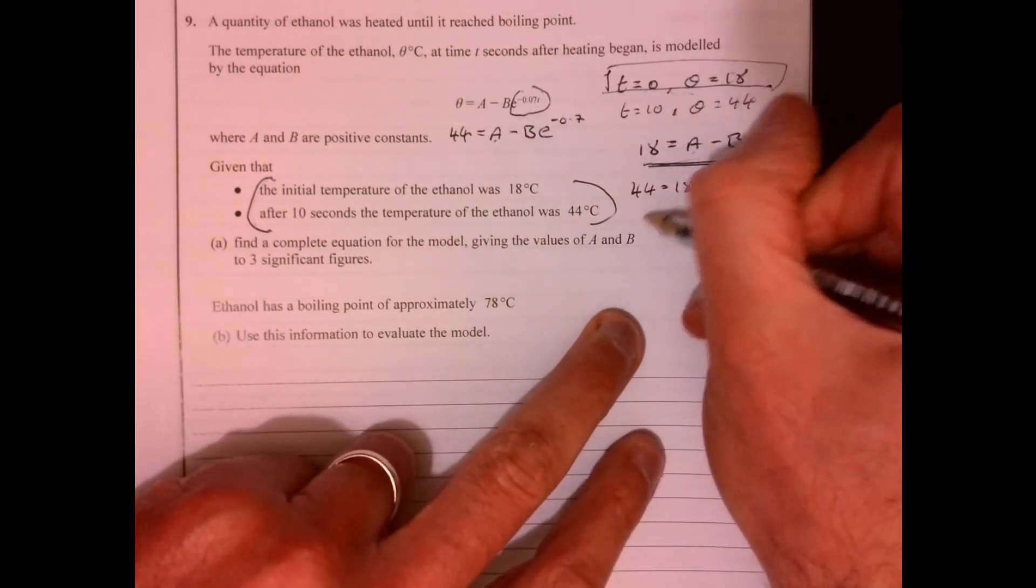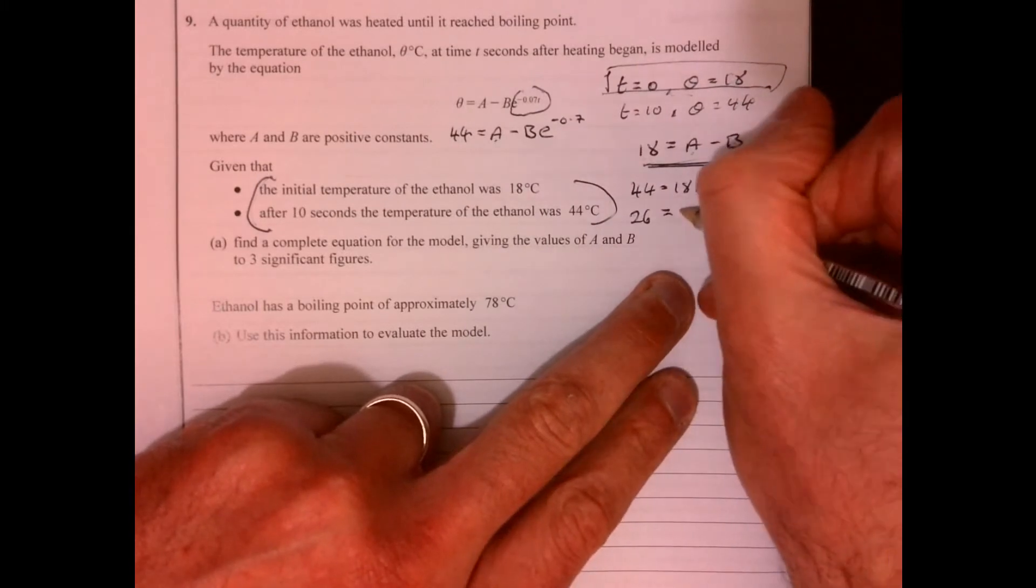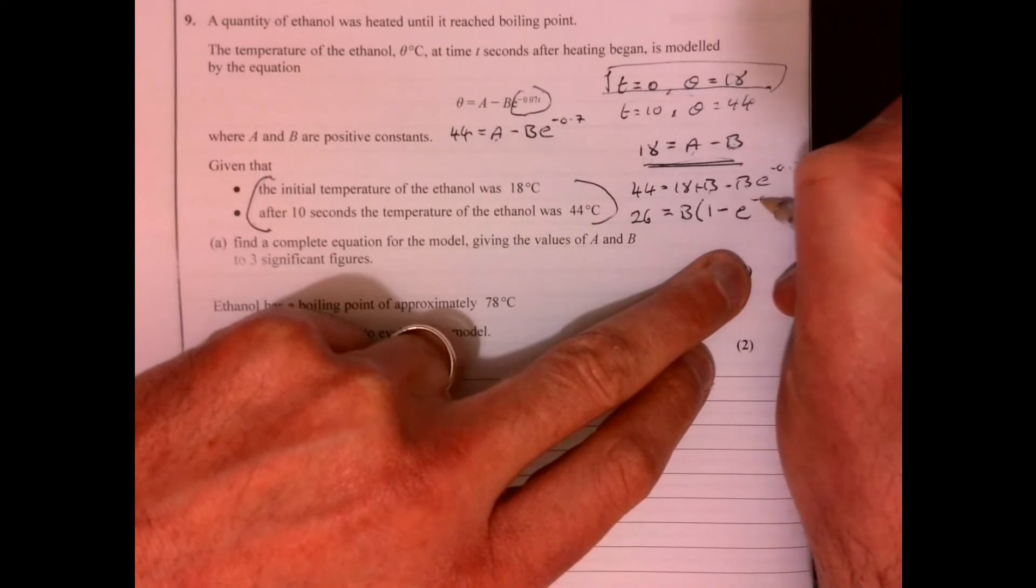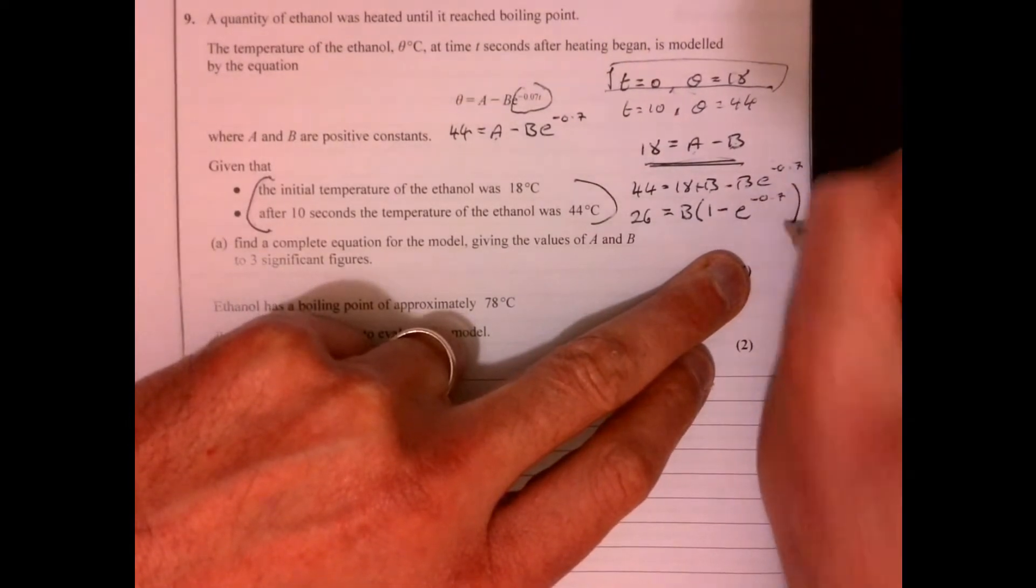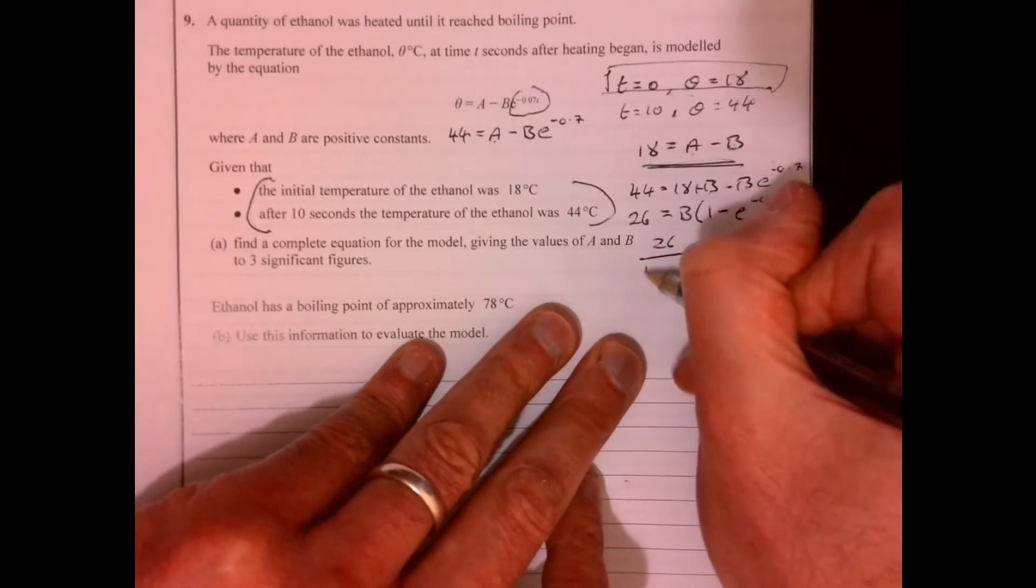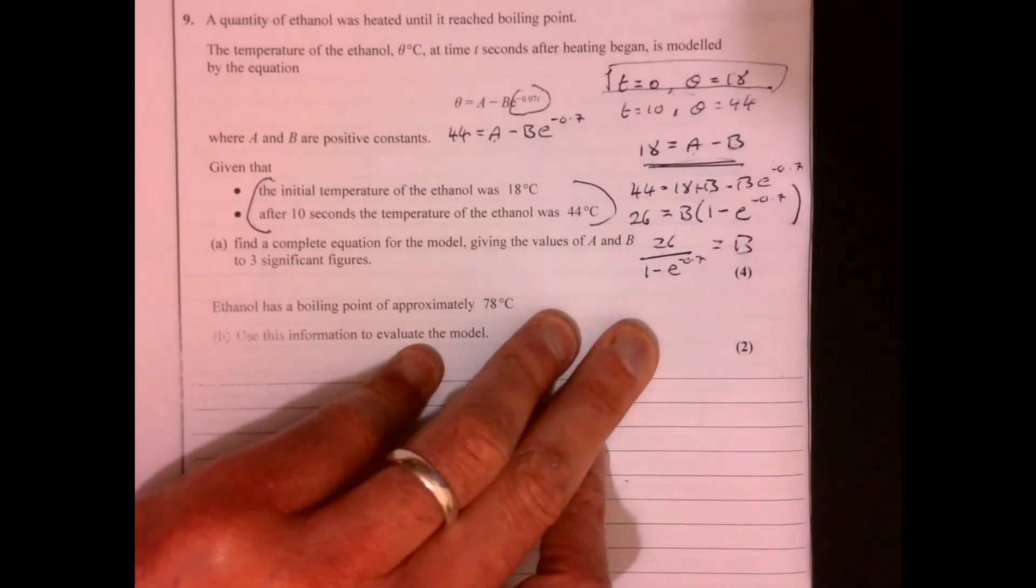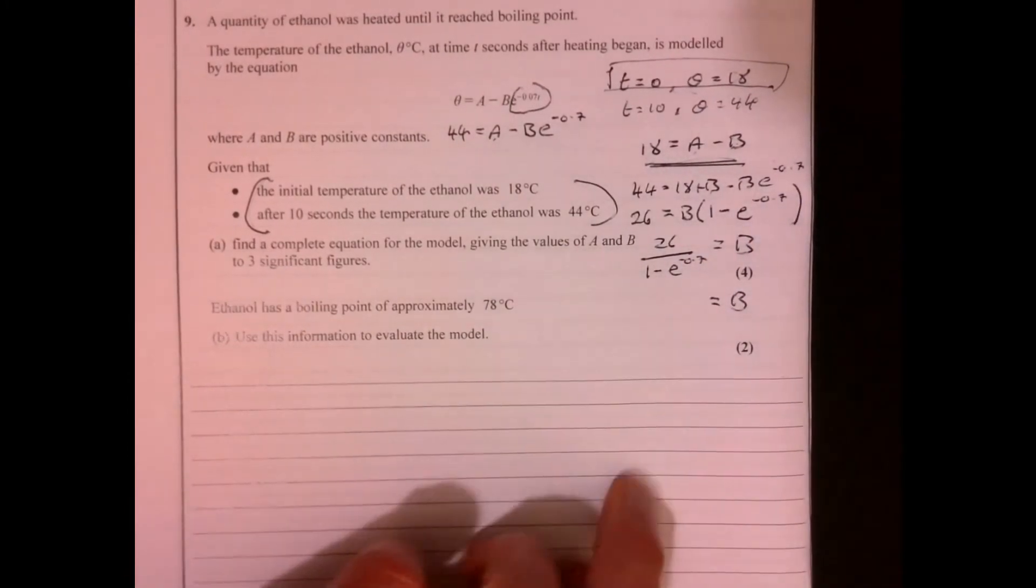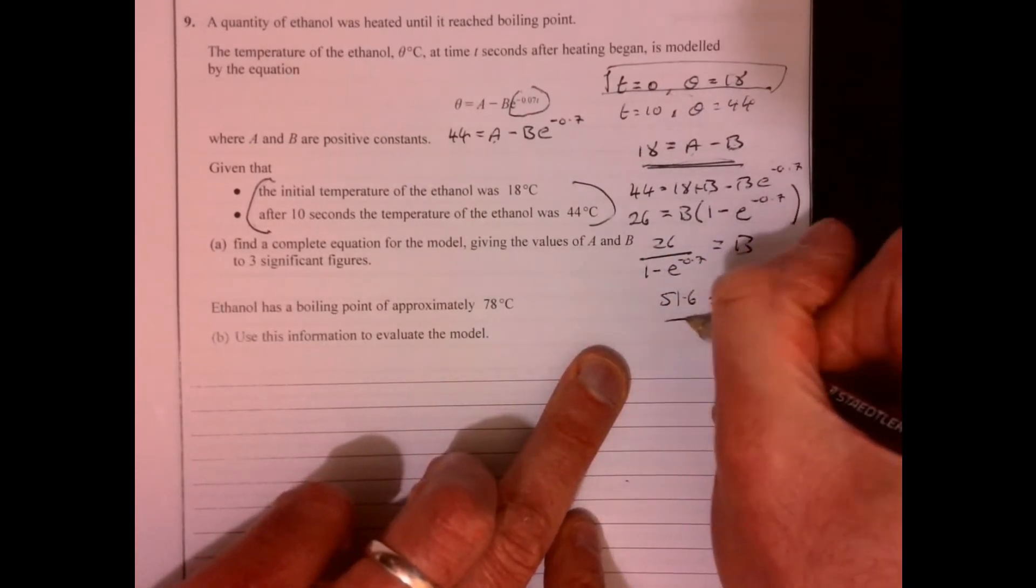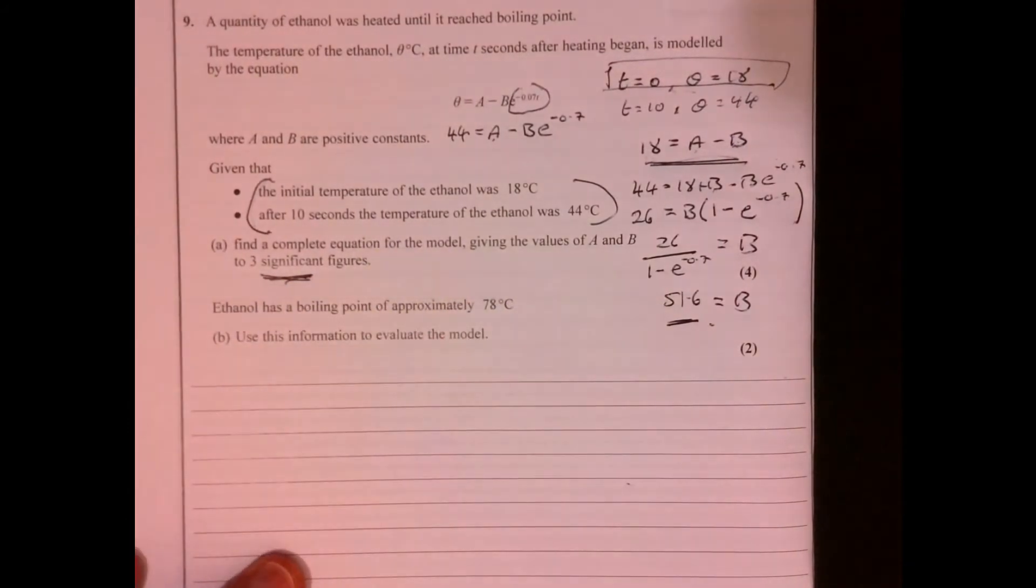Take away 18 from both sides, 26. And then if we factorize with the B, then that gives me 1 minus E to the minus 0.7. So B equals 26 divided by 1 minus E to the minus 0.7. And feed that into your calculator, and you'll get B equals 51.6. Remember, it did say three significant figures there.